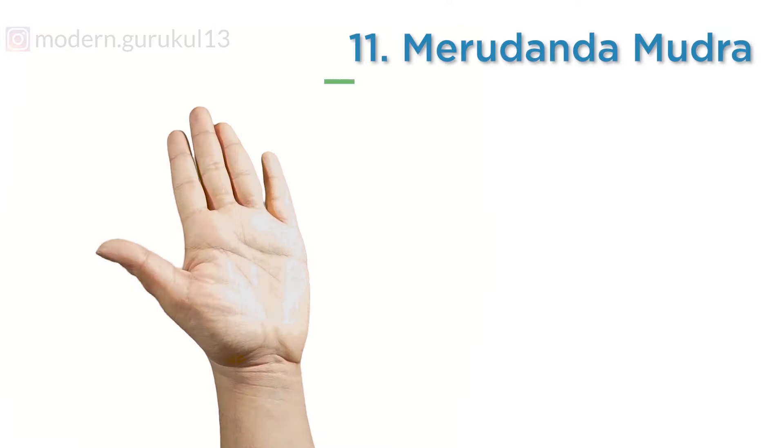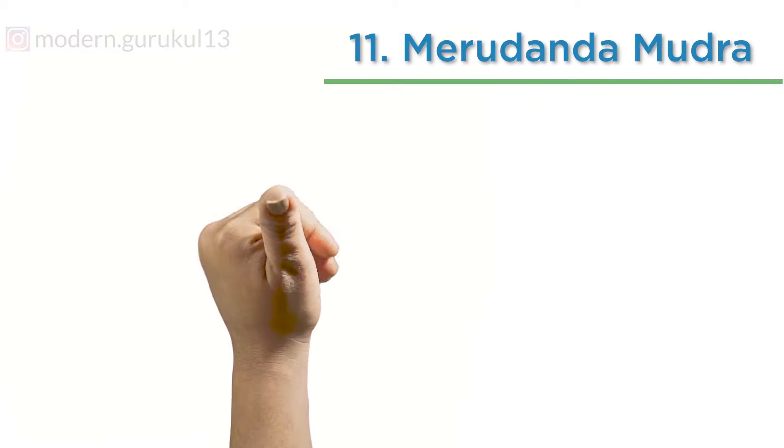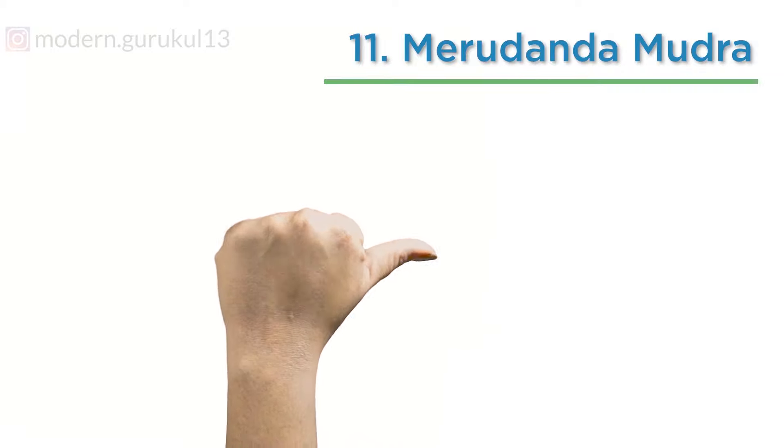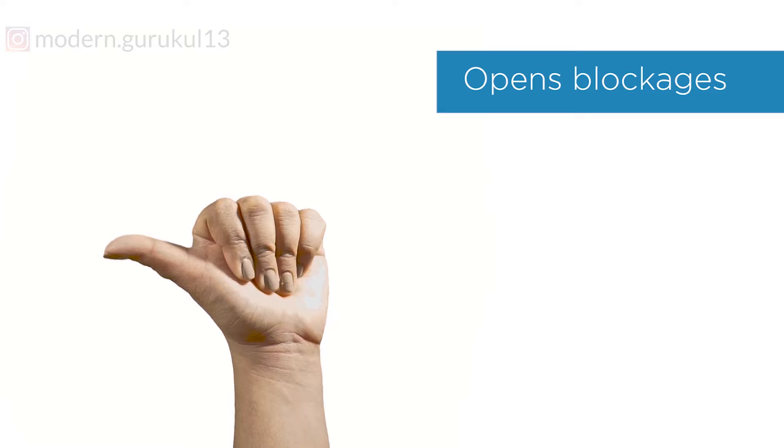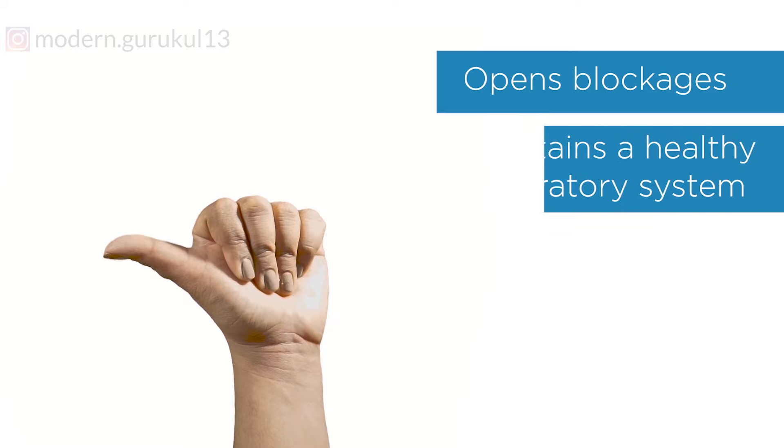Meru Danda Mudra: Make a fist with all the fingers and the thumb is pointing upwards. It opens all blockages in the spinal cord and it also maintains a healthy respiratory system.